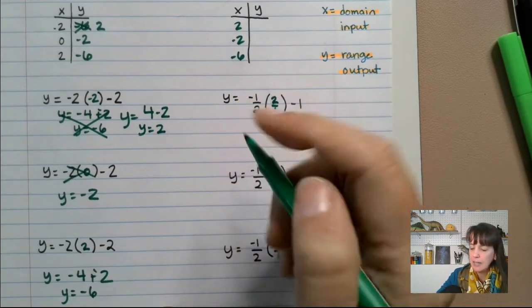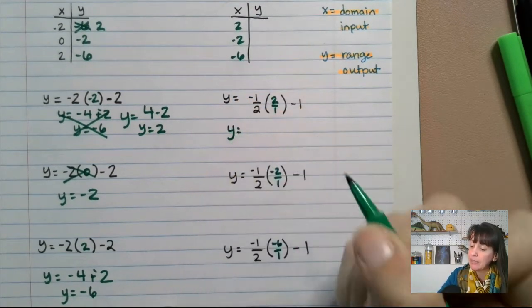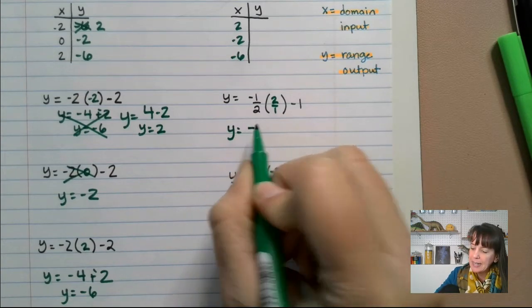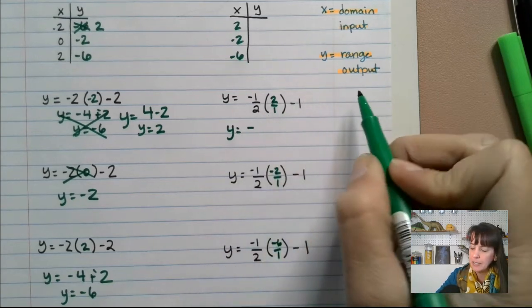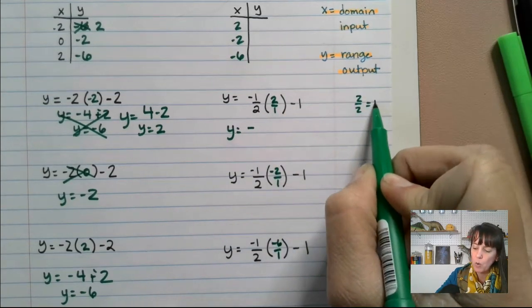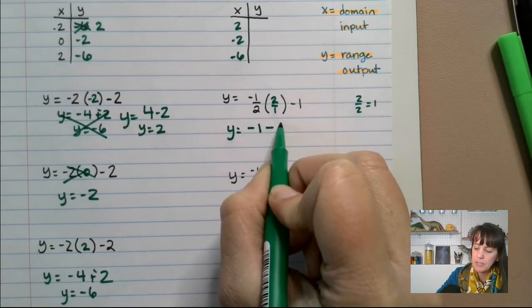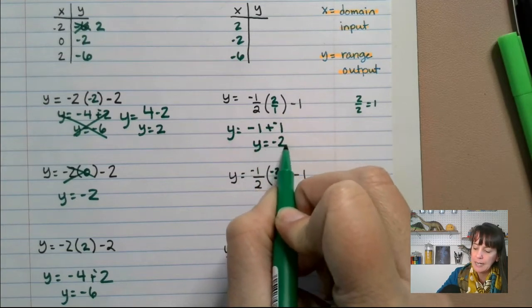A negative times a negative is a positive. And apparently I need to remind myself of that. So we get negative. And then if I multiply straight across the top, I get two. Straight across the bottom, I get two. Two over two, remember is one. So I get negative one minus one. Add the opposite. I get y equals negative two.